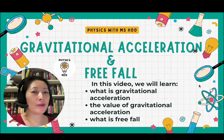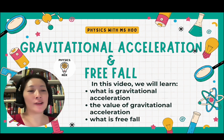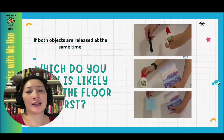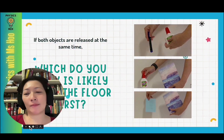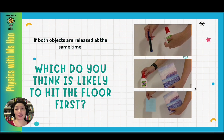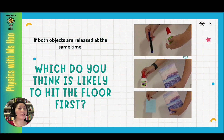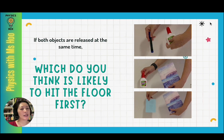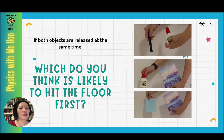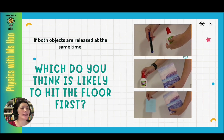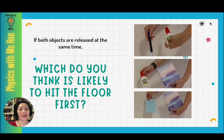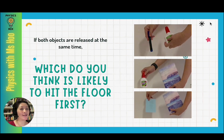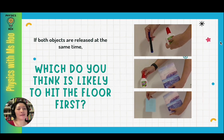Now, before we get started on the lesson, let's try to make an intelligent prediction. In the pictures on the right, I've got three pairs of different objects. Take a look and try to think which object is likely to hit the floor first if they were both released at the same time. We're going to take a look at the answer in just a little bit.